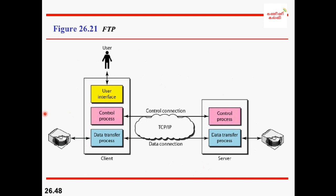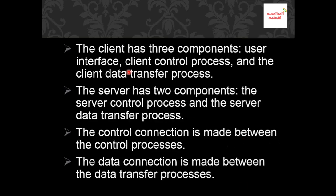Looking at the diagram, this is the client and this is the server. Between client and server there are two connections: data connection for file transfer, and control connection for command and response transfer. The data connection is established between the two data transfer processes, and the control connection is between the two control processes. The client has three components and the server has two components, one of which is the user interface side.